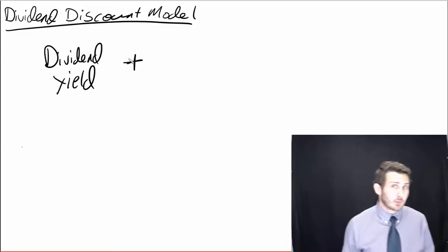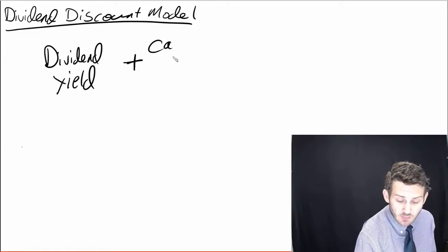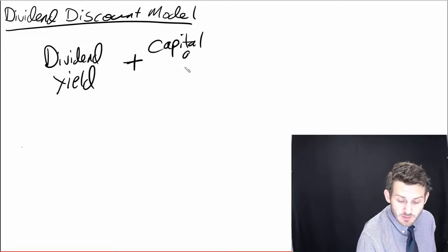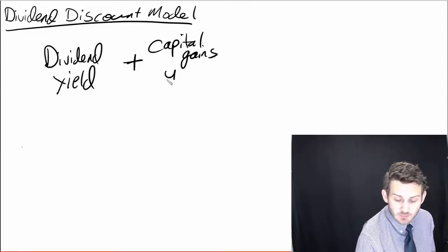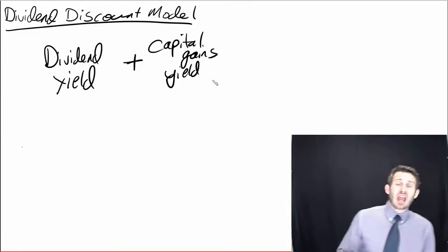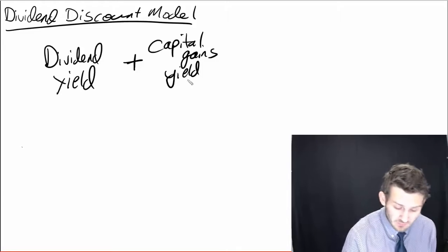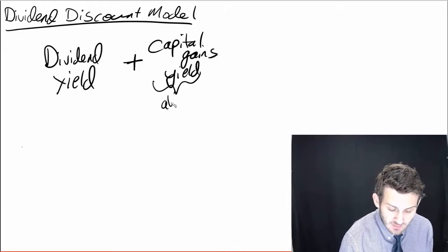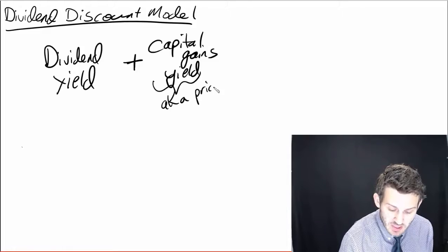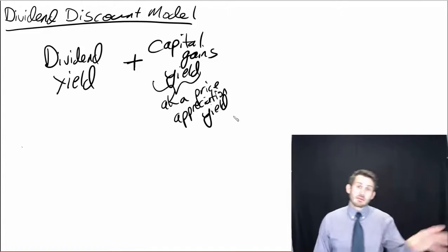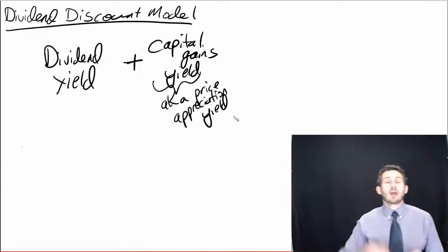Then we have another component that's going to come into this and this is that capital gains yield. And this capital gains yield is basically the change in price. We can also call this the price appreciation yield. So we have our dividend yield plus our capital gains yield.